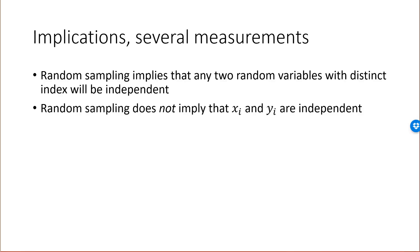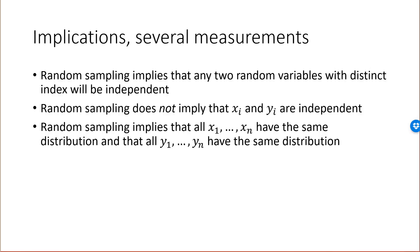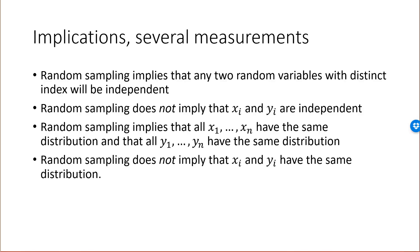With random sampling, all the x observations will have the same distribution — they all have the same distribution as the population. The second measurement, the y variables, will also have the same distribution among themselves. However, the iid assumption — the random sampling assumption — doesn't mean that xi and yi have the same distribution, since they refer to completely different concepts. For example, the distribution of total revenue of firms is not the same as the distribution of total costs.